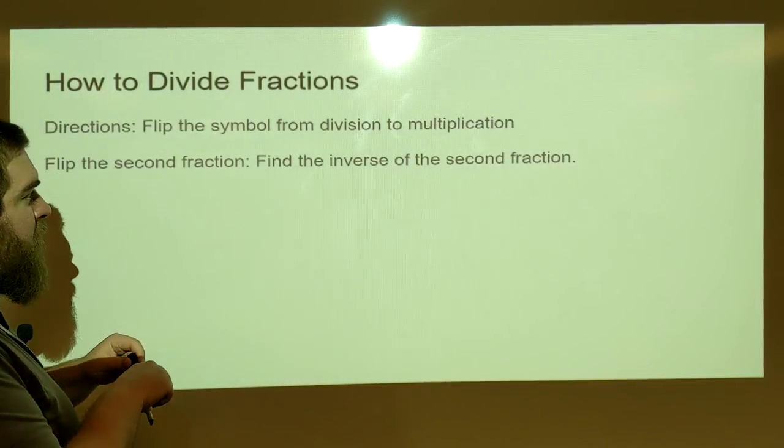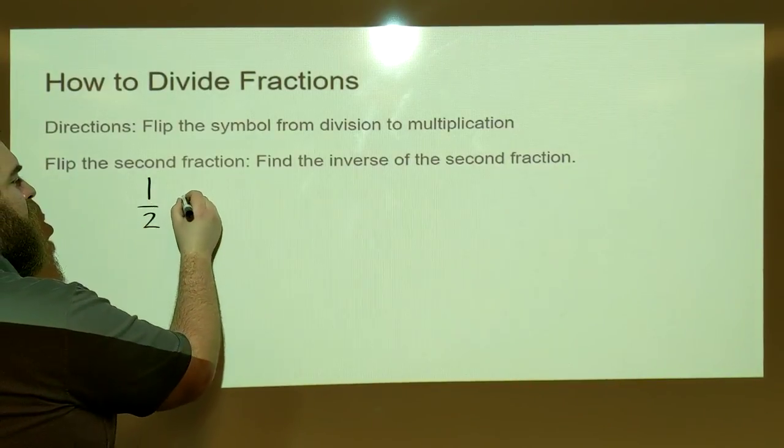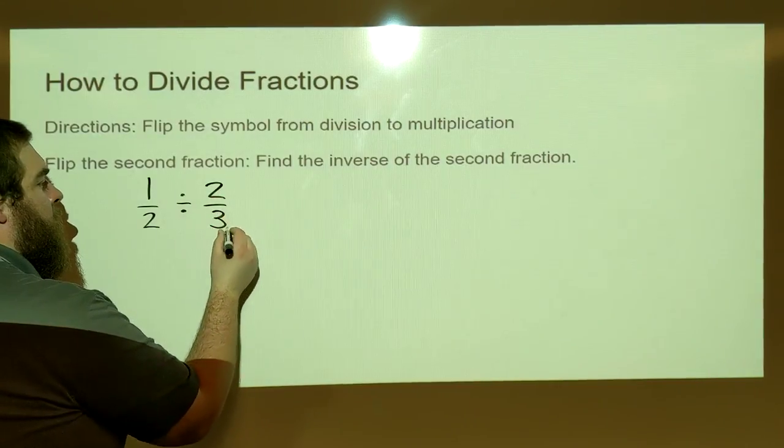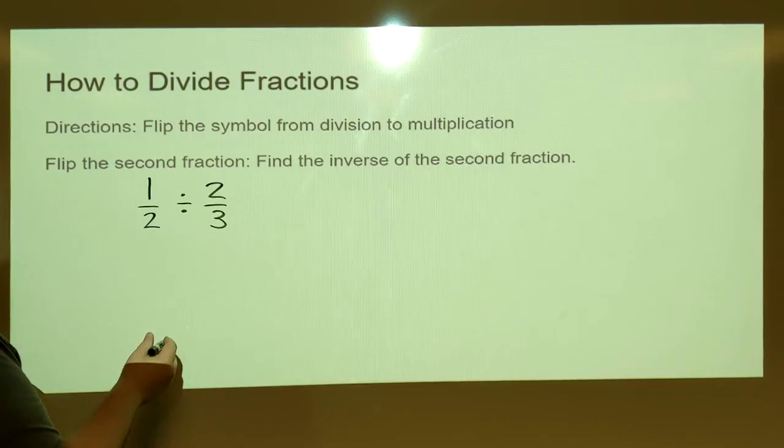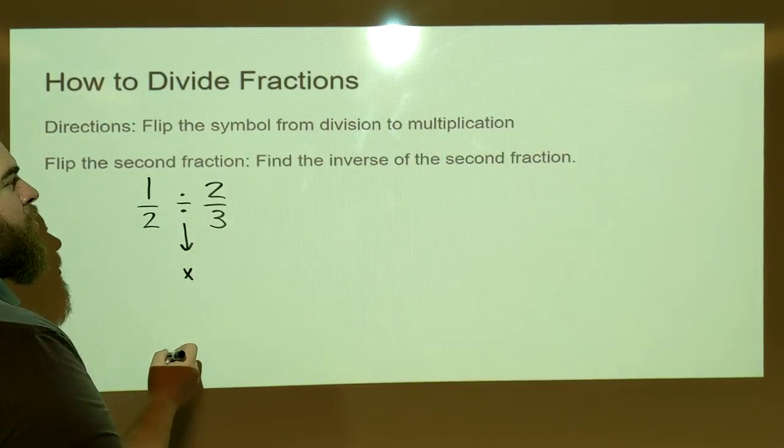If we use the fractions from the last problem, let's say it's one-half divided by two-thirds. What the directions say to do, it says flip the symbol from division to multiplication. Okay, so I flip that symbol from division to multiplication.